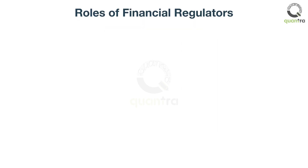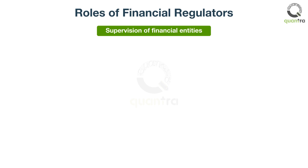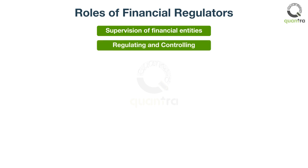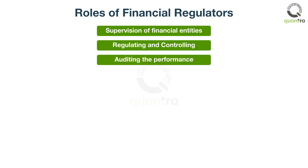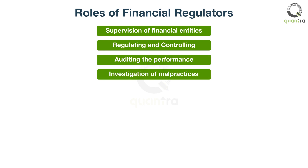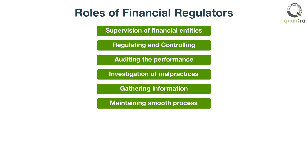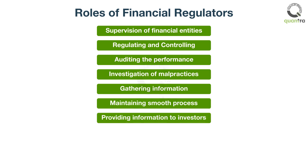Some of the major roles performed by financial regulators are: supervision of stock exchanges, listed companies, investment management companies, etc.; regulating and controlling the business on stock exchanges and other securities markets; auditing the performance of the stock market; investigation of abusive trading practices and fraud; gathering information on the market; maintaining smooth processes for clearing and settlement; and providing information to investors to protect them from improper practices.